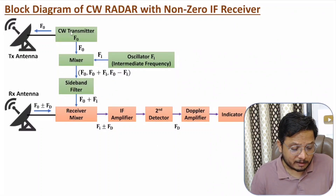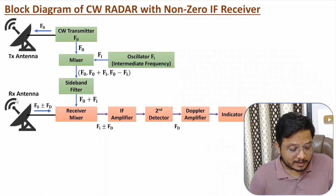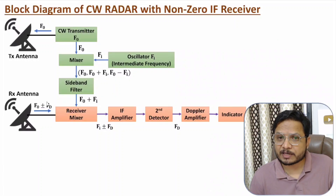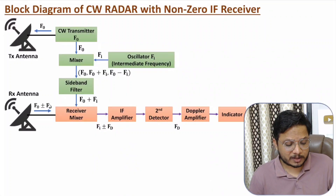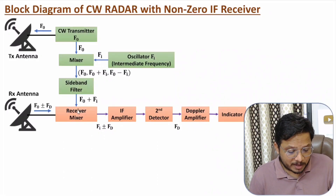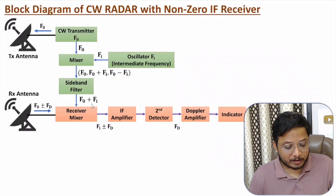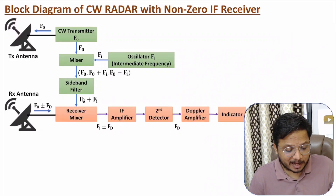Here we have the transmitter circuit, with which we transmit a high power signal at frequency F0. In the receiver circuit, the received echo signal has frequency F0 plus or minus FD. This plus or minus FD is the deviation in frequency that occurs based on the motion of the target. If the target has velocity V, the deviation in frequency will be 2V divided by lambda. The input to the mixer has frequency F0 plus or minus FD, and the second signal has frequency F0 plus FI. The mixer takes the difference of these two, cancelling F0, and the output frequency is FI plus or minus FD.